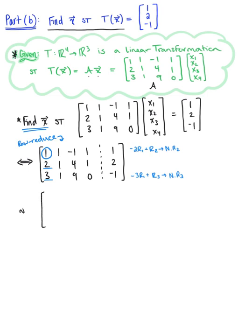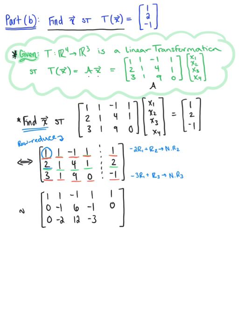This leaves the equivalent matrix. Row 1 stays as [1, 1, -1, 1 | 1]. For row 2: -2+2=0, -2+1=-1, 2+4=6, -2+1=-1, -2+2=0. For row 3: -3+3=0, -3+1=-2, 3+9=12, -3+0=-3, -3-1=-4. The first column is all set, so we move to the second pivot position.